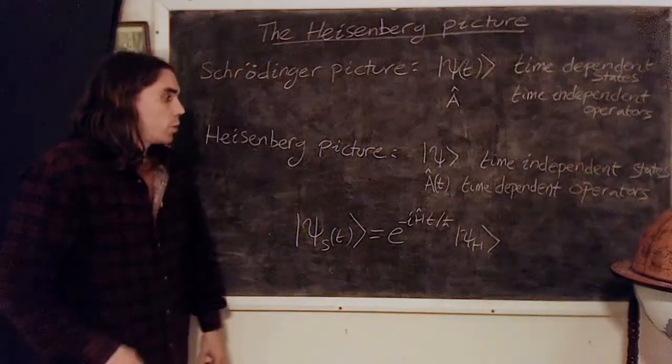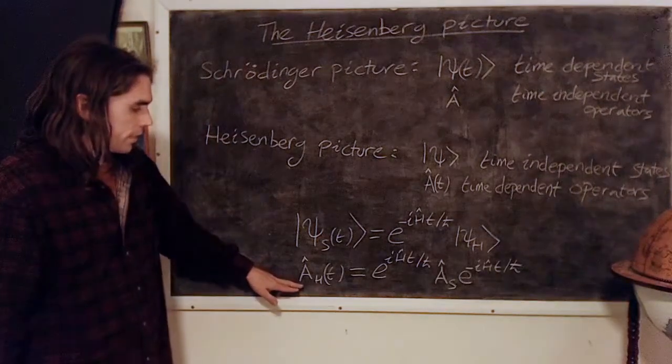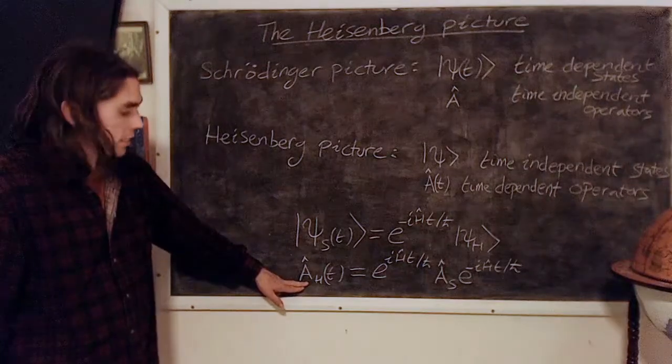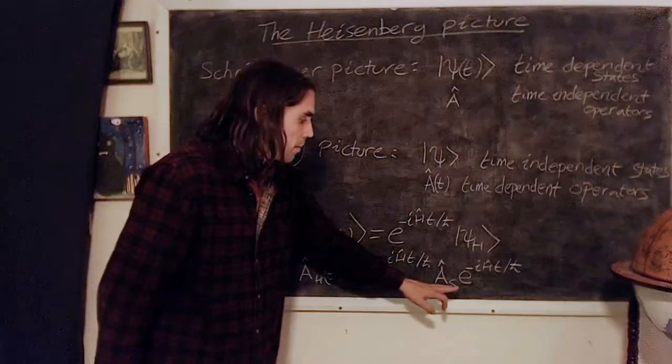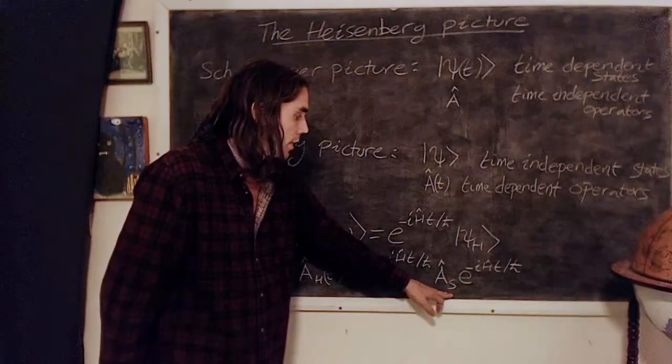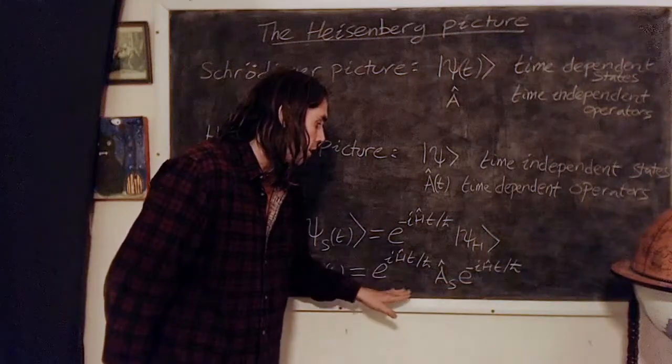For operators we get this relation: the time dependent operators in the Heisenberg picture are just given by the time independent operators in the Schrödinger picture pre and post multiplied by these unitary operators.